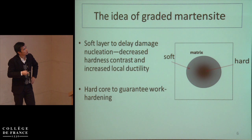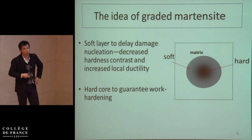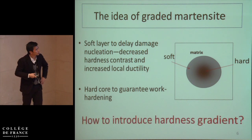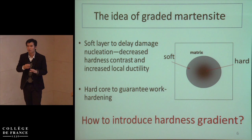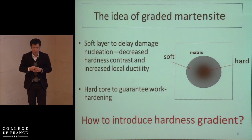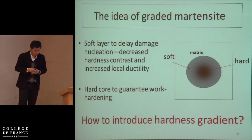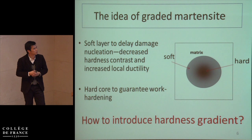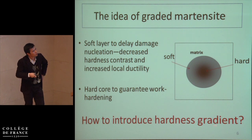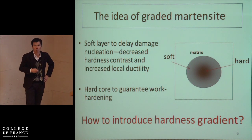We designed the hard core to guarantee the work hardening. The idea is quite tricky because we have to introduce a hardness gradient within the phase — let's say in 2 micrometers. To answer this question we have to think about what controls the hardness of martensite.